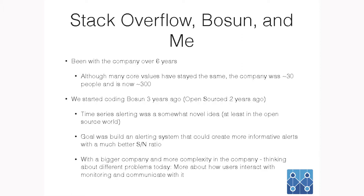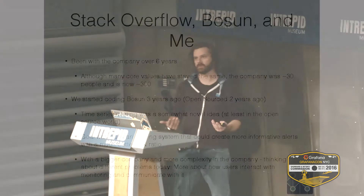I started coding Bosun with one other person three years ago. It was open source two years ago. At the time, time series alerting was a somewhat novel idea, especially in the open source world — there wasn't a lot of that. Now there's Prometheus, Grafana, and other things. The goal was really to build a better alerting system in terms of signal-to-noise ratio and informative alerts — that was the two things frustrating me the most. I think we've been largely successful at that, so now I'm thinking about different problems.